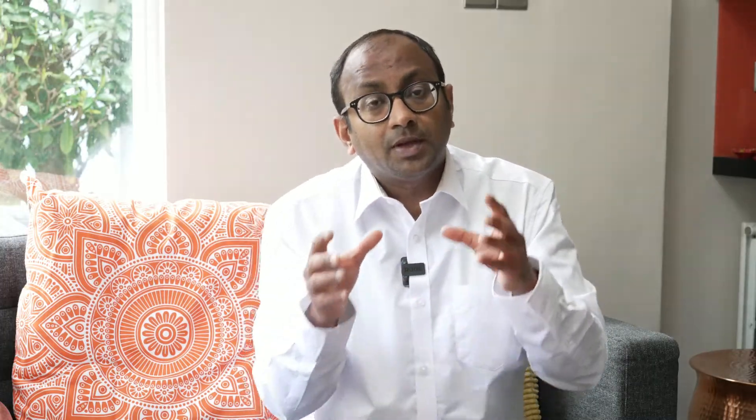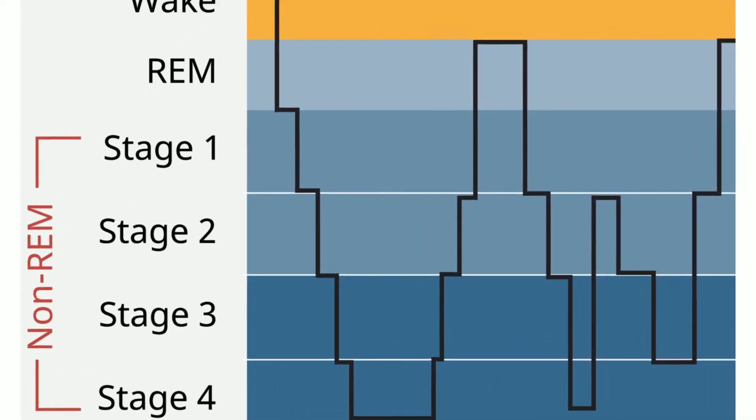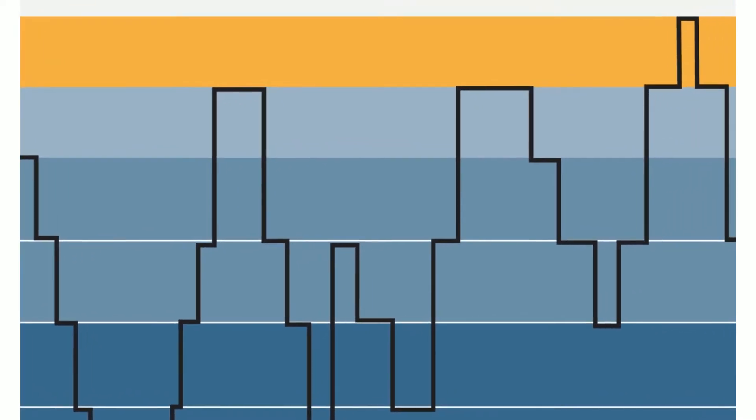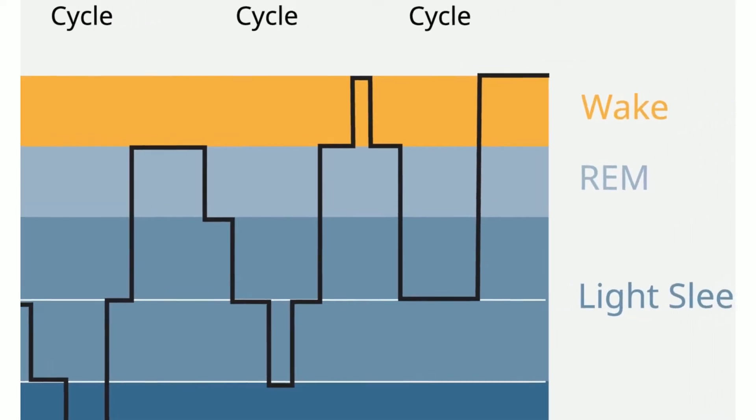In a typical seven to nine hour period, we have about five such phases of REM, NREM, REM, NREM and so on. In a 90-minute phase, about 20% of the time is REM and the rest is NREM. This ratio keeps changing — what's been shown by recent studies is that we spend a lot more time in NREM in the first half of our sleep, and then in the second half there is more time given to the REM phase.